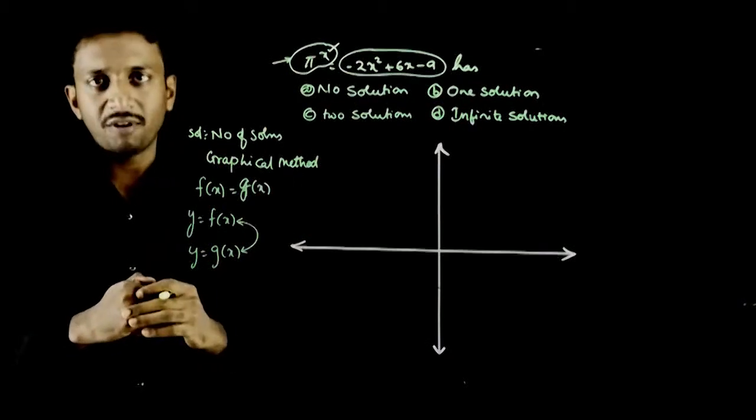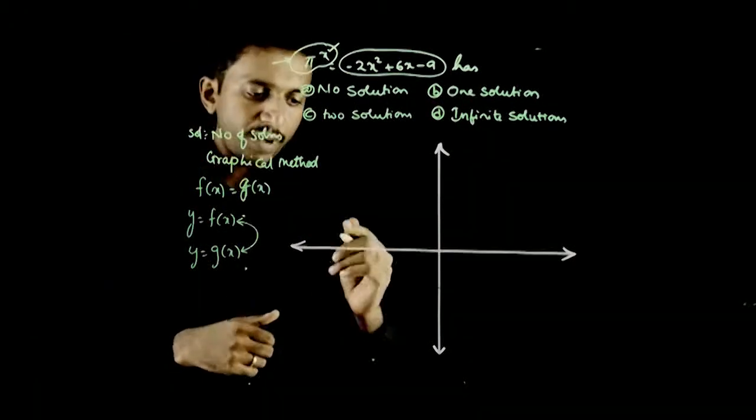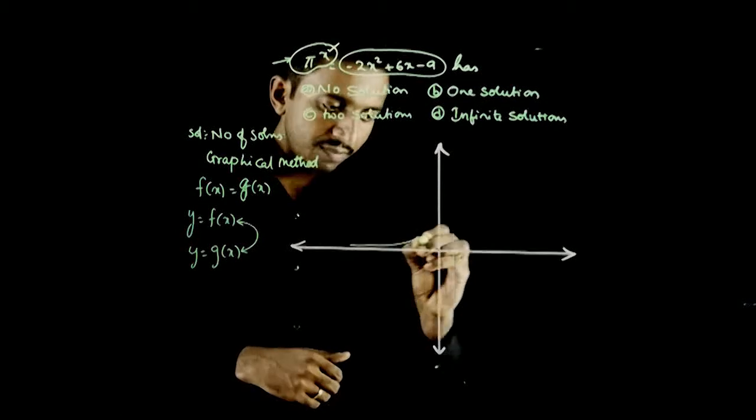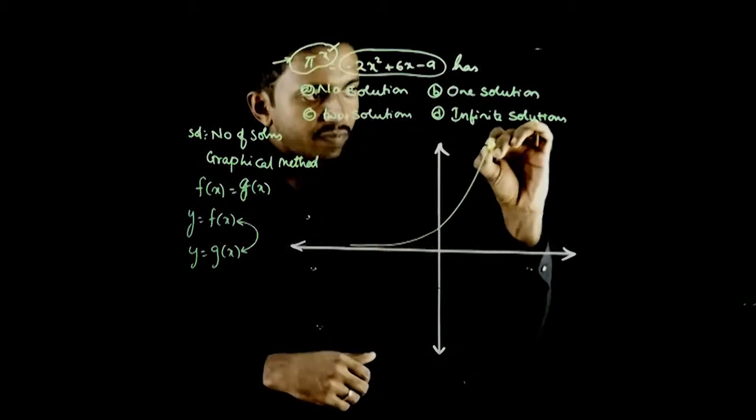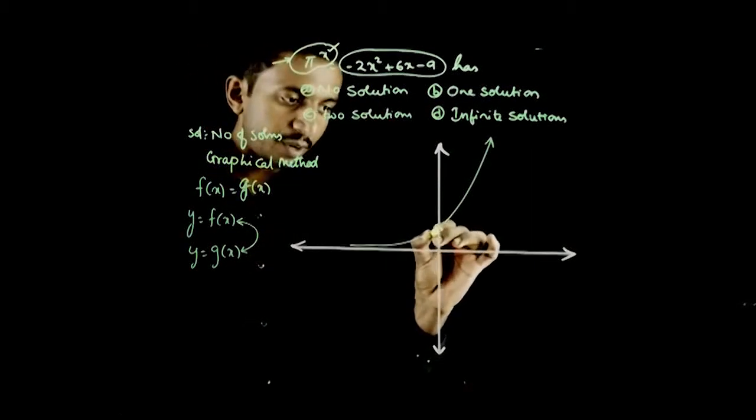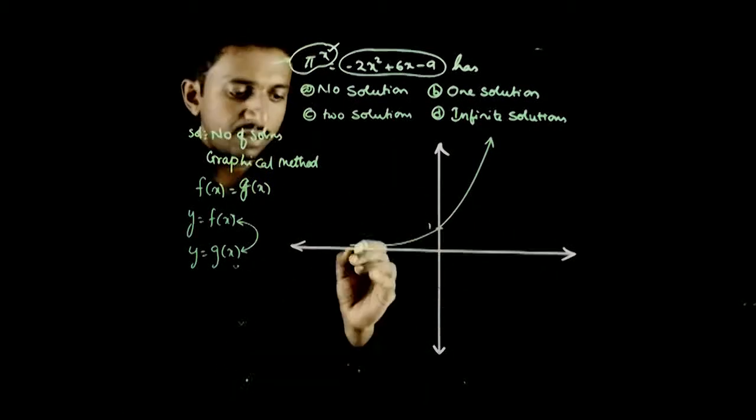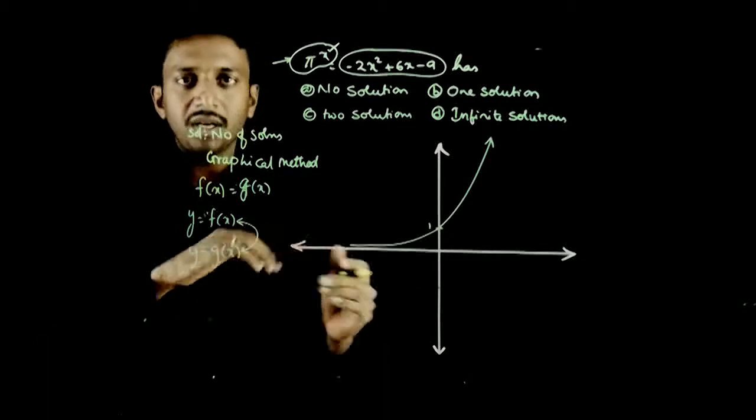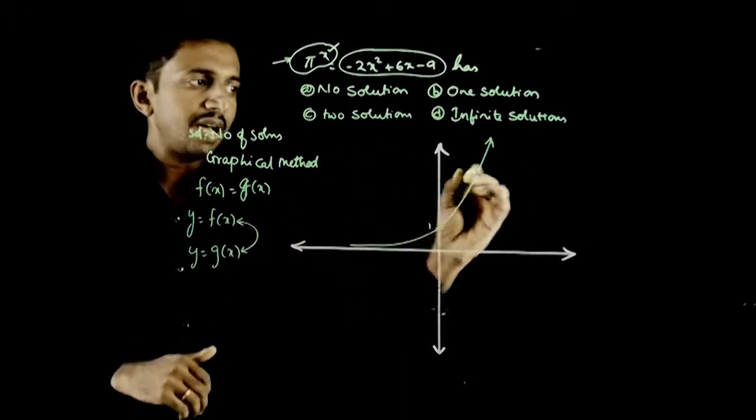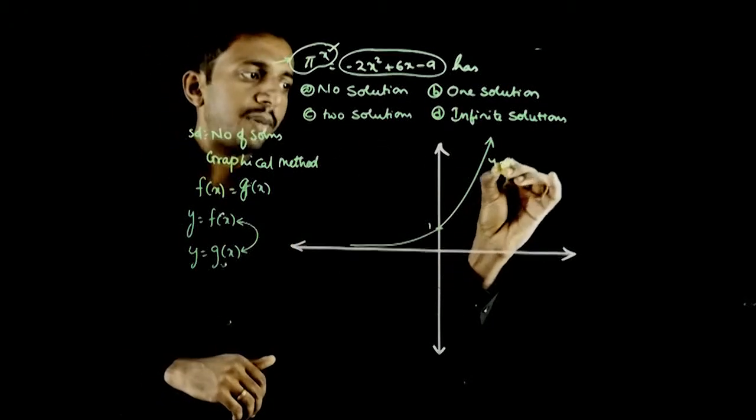So first π^x graph. Exponential function. So π^x graph looks something like this. Goes up exponentially, this is my point (0, 1), y-axis at 1. And this comes asymptotically to the x-axis. It is a graph of y = π^x.